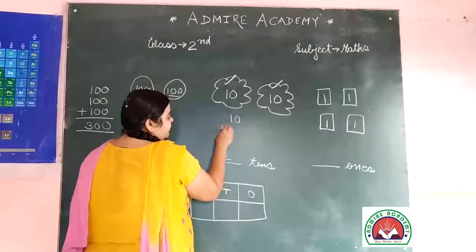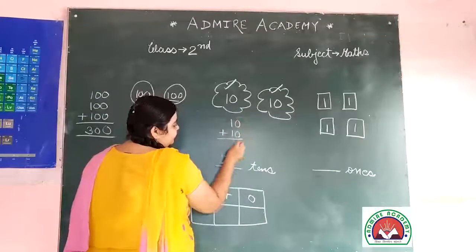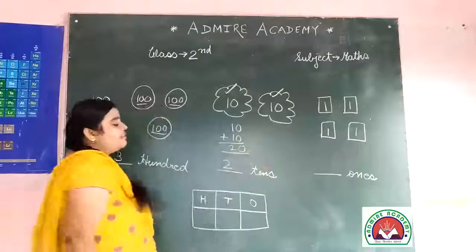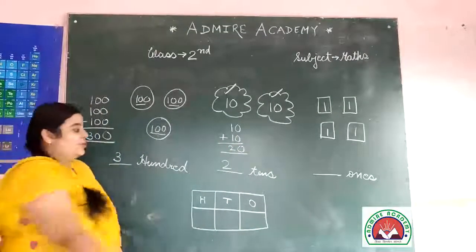Ten plus ten. One plus one, two. Two. That becomes twenty. So two.